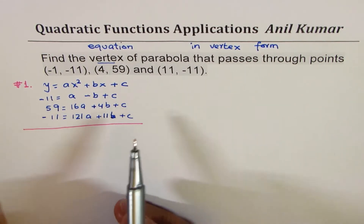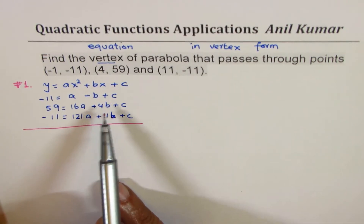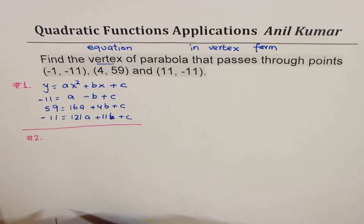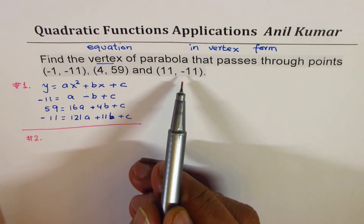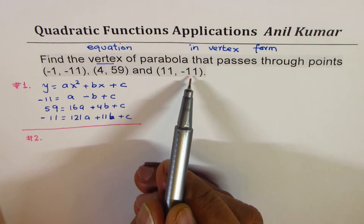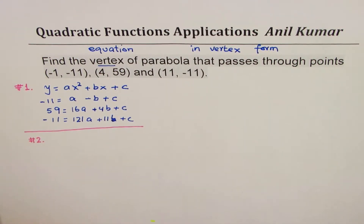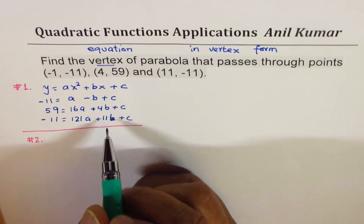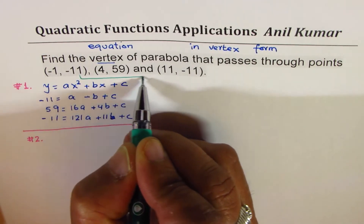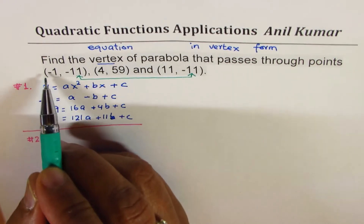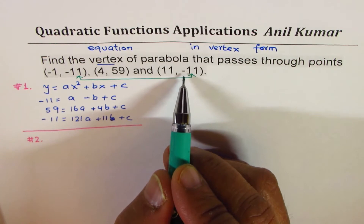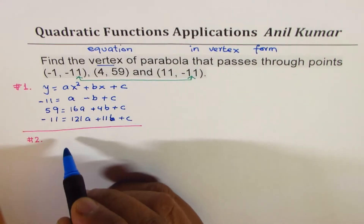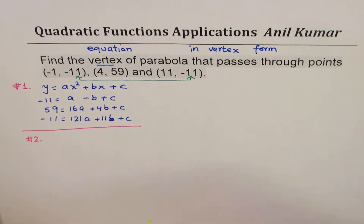Now, this is not so easy — you could subtract equations to get rid of c, but it's like solving simultaneous equations. Let's go to method number 2. We observe that point number one and point number three have the same y-values: at x = -1, y = -11, and at x = 11, y = -11. So, let me sketch a parabola to show what this means.